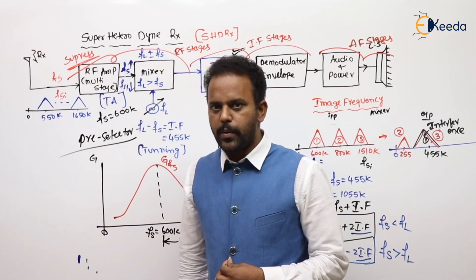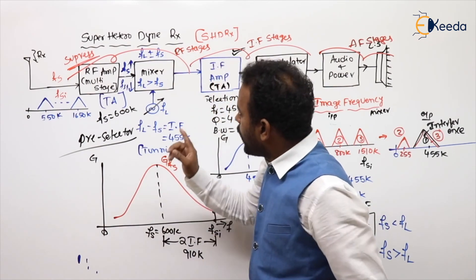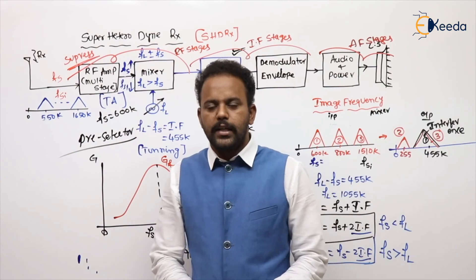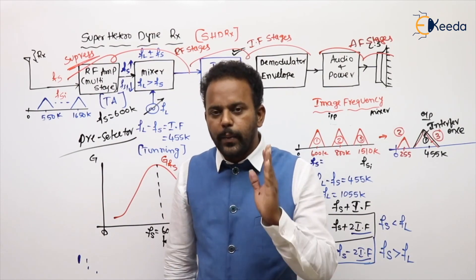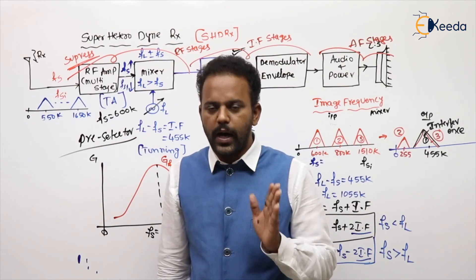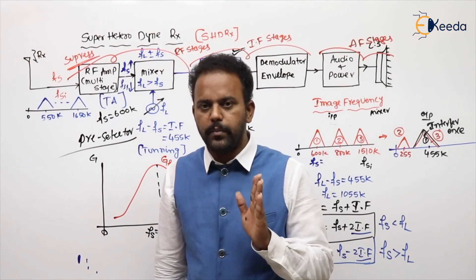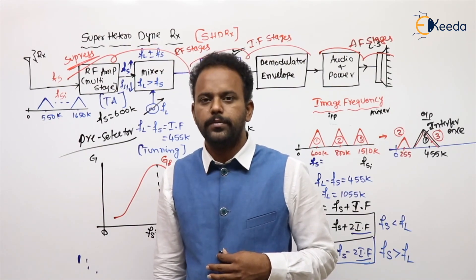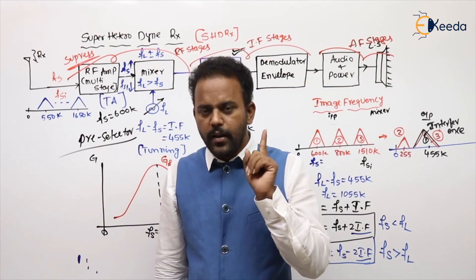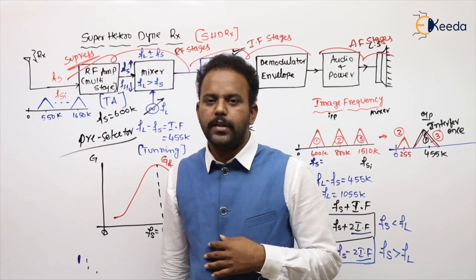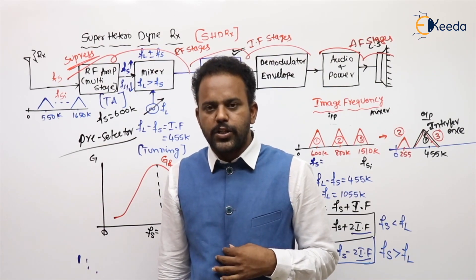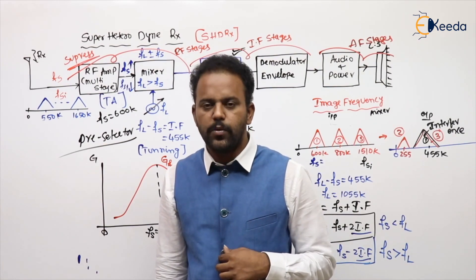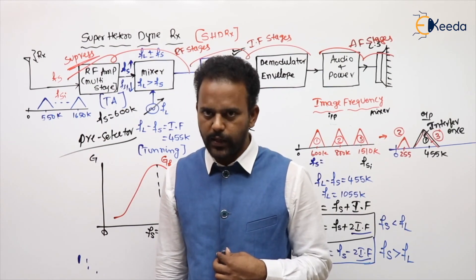There is also another term: the tuned amplifier combination with the mixer is called a pre-selector, because some selection is going on there. Image suppression must happen in the RF stages — it should not cross the mixer. Now we will bring some formulas for this: that is called the Image Rejection Ratio, or IRR, which we will discuss in the next session.